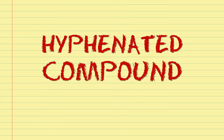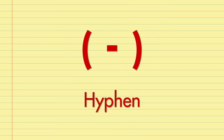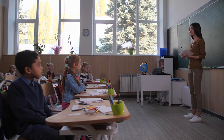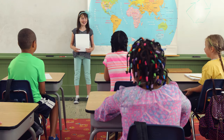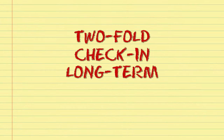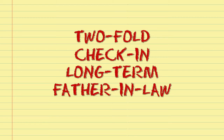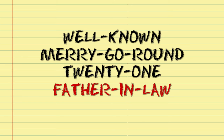Now that you know about closed and open compound words, let's learn about hyphenated compound words. A hyphen is a dash that is used to join words, and hyphens let us know that joined words have a combined meaning. A hyphenated compound word is formed when two or more separate words are joined together by a hyphen. Hyphenated compound words look like this: two-fold, check-in, long-term, father-in-law, well-known, merry-go-round, twenty-one, and first-rate.